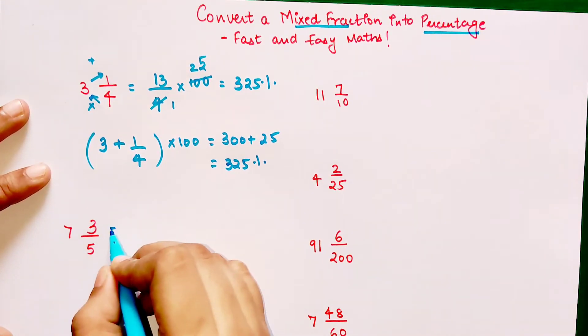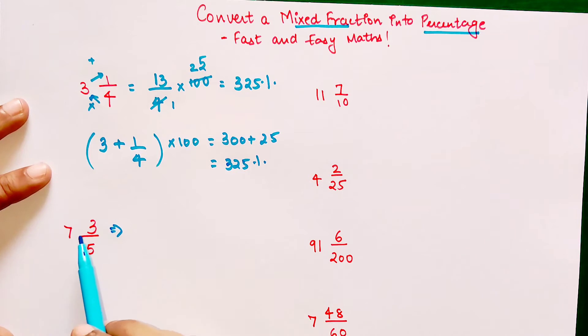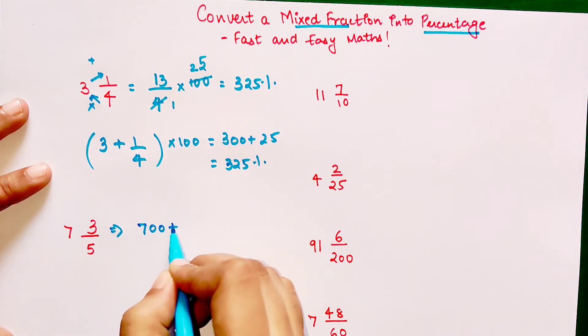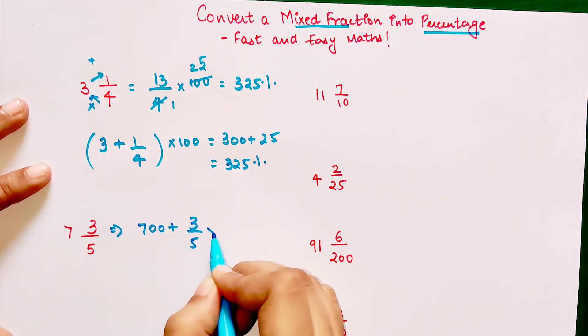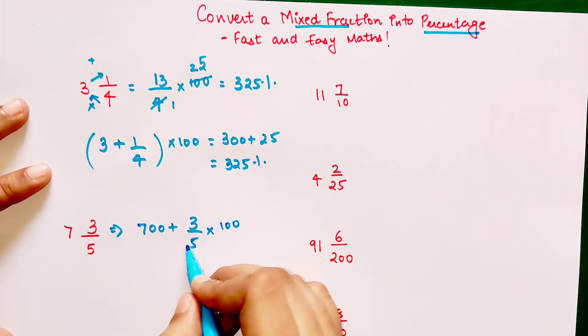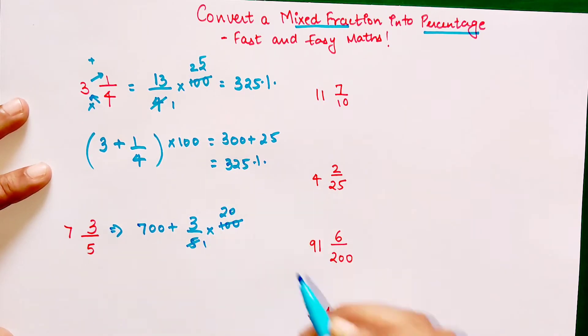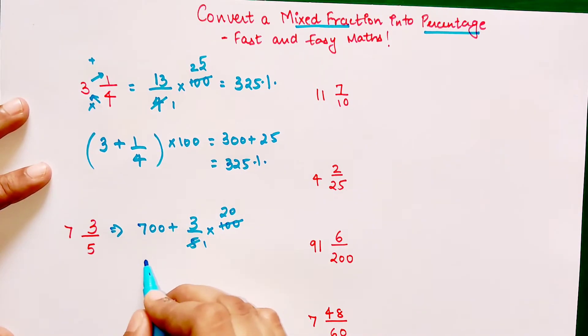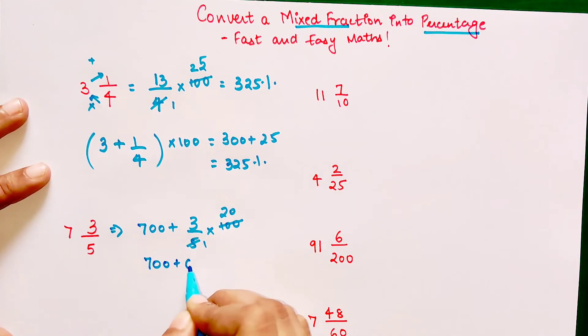Now we're not going to follow the traditional method, just the trick. We get 700 plus 3/5 into 100. 5 twenties are 100, so 3 into 20 gets you 60. So 700 plus 60 will get you 760 percent.